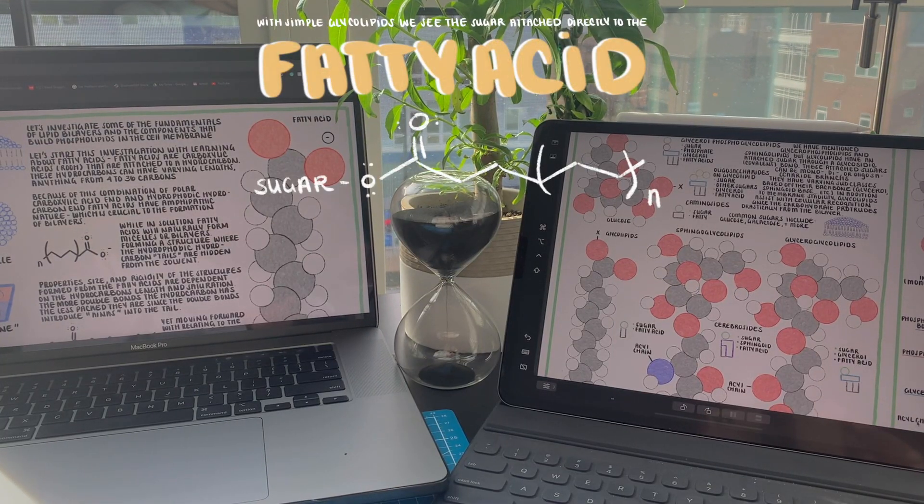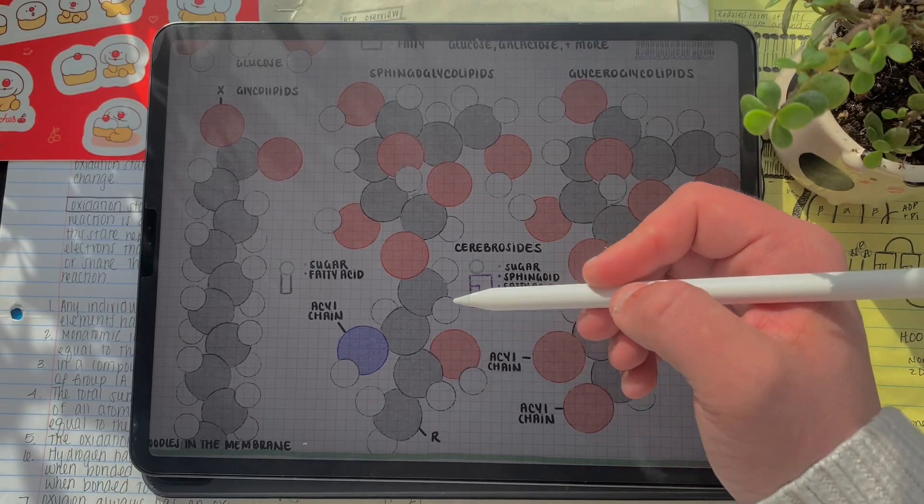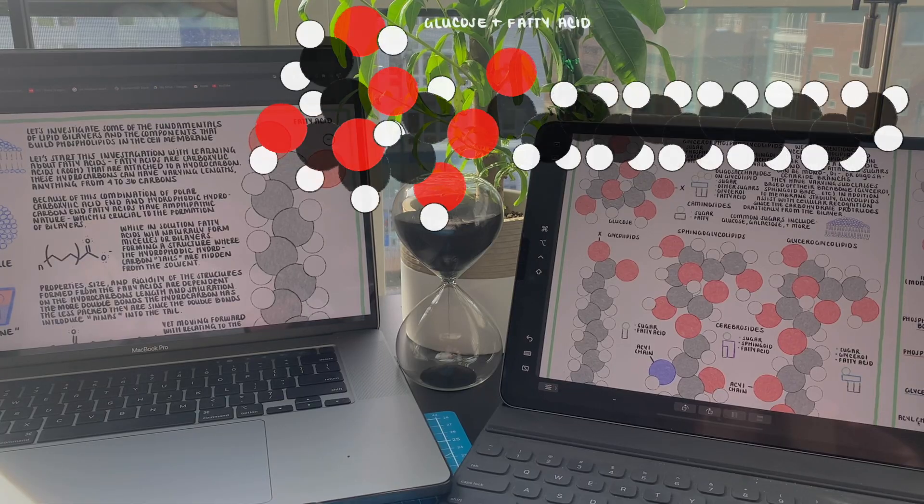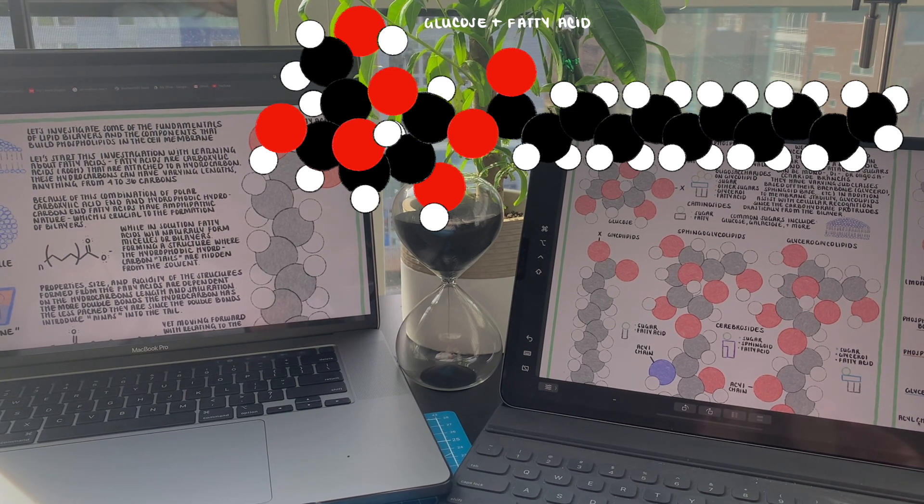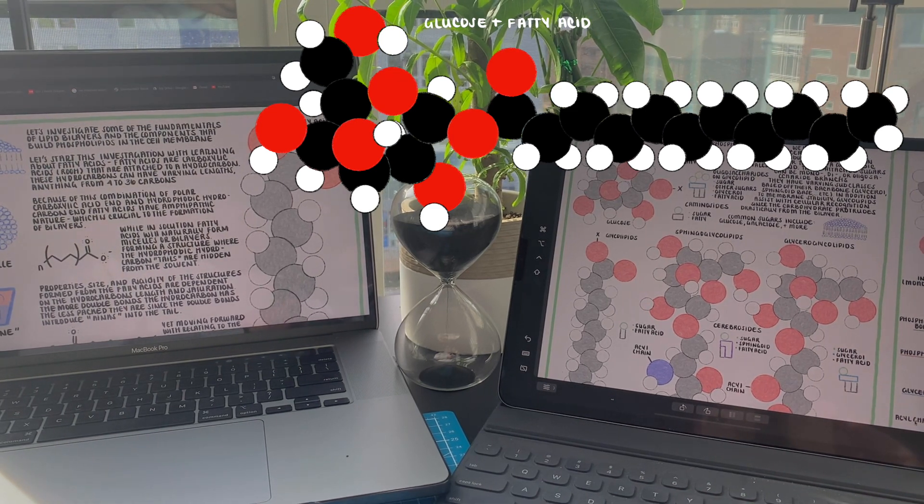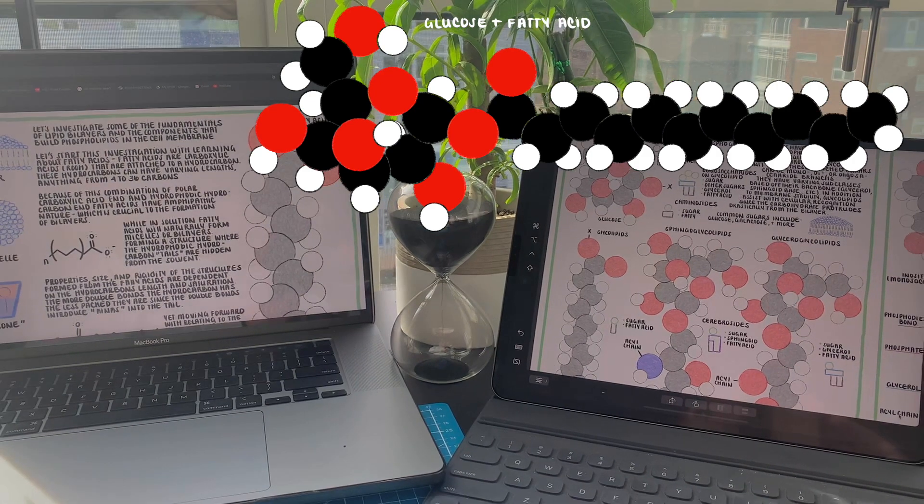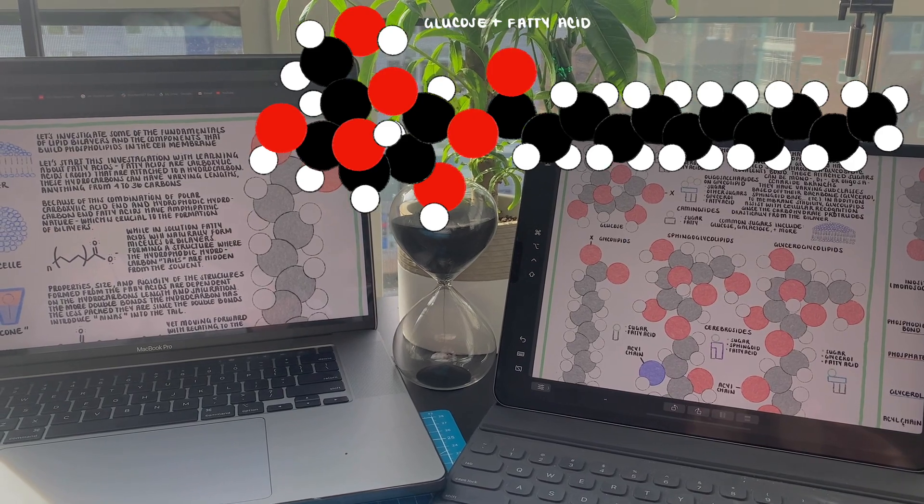Glycosidic bonds are a type of covalent bond that attaches a cyclic sugar molecule to another molecule. Our first example of a glycolipid is a fatty acid attached to a monosaccharide, meaning a single sugar. In this case, let's examine glucose. So the fatty acid is attached through that glycosidic bond to the first carbon of the cyclic glucose molecule.